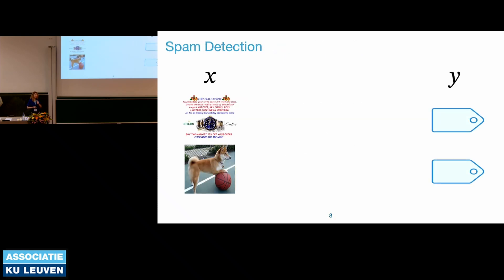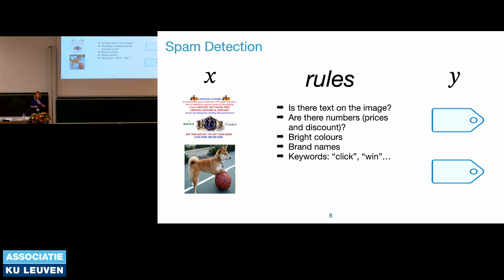Let's look at a quick example: spam detection, one of the traditional security applications. As humans, we do implicit pattern recognition very fast — we recognize a natural image of a dog versus something that looks like spam. If we want software to do this, we could try to define rules: are there bright colors, text, keywords? It would take time to define the right rules. That gives a rule-based classifier. When we want to automate better without relying on a human expert for rules, we go for a more end-to-end machine learning approach.